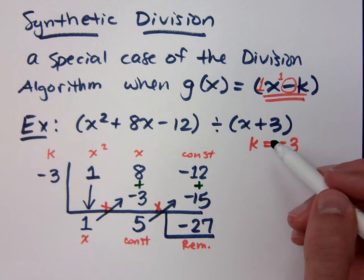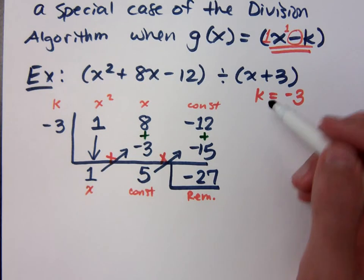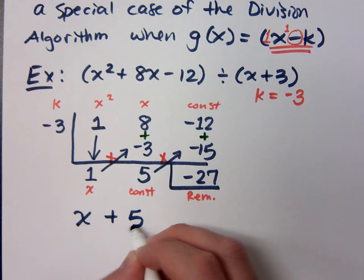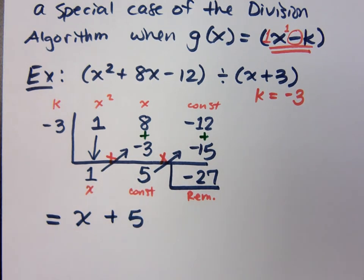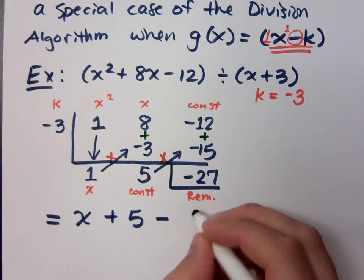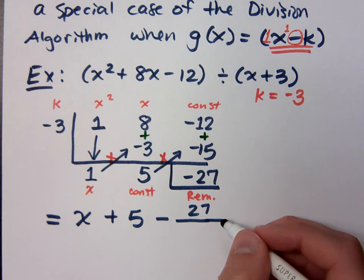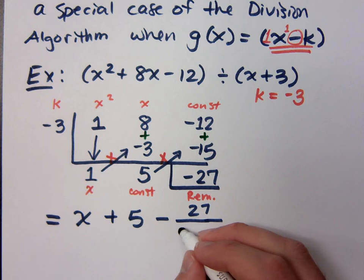So, that means that this division gives me x plus 5. And how do we typically write the remainder term? How do we write that remainder piece in 0308? Because it's the same way here. Over the divisor. So, we have a negative 27. What were we dividing by? The k was negative 3, but the actual divisor itself is x plus 3.